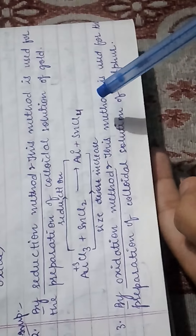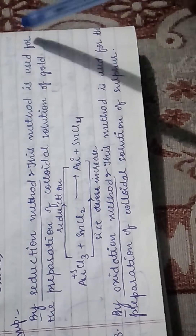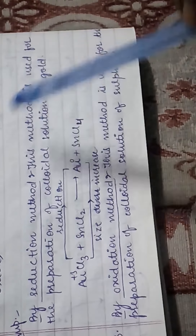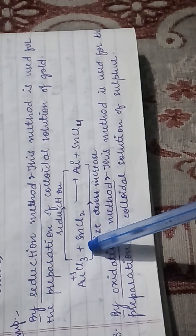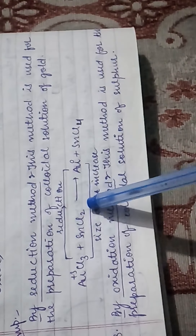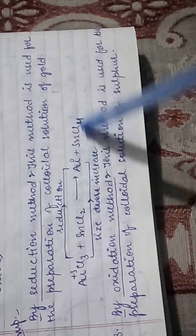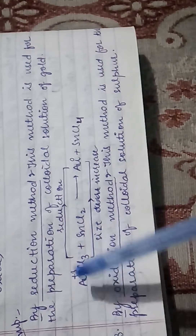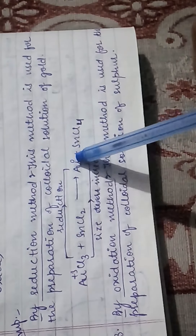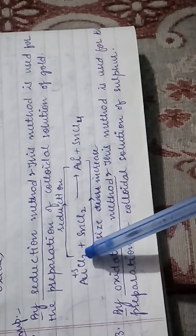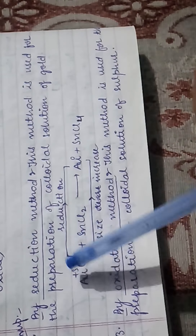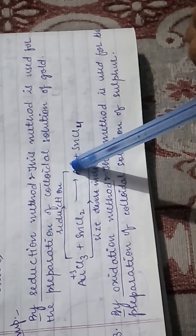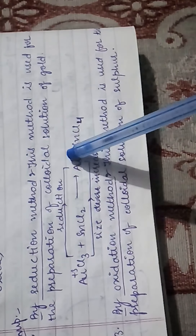The second method under aggregation is the reduction method, used to prepare colloidal solution of gold. Here, AuCl3 is reacted with SnCl2, giving gold and SnCl4. In this reaction, the oxidation state of gold changes from plus 3 to 0; gold is reduced and the particle size increases.